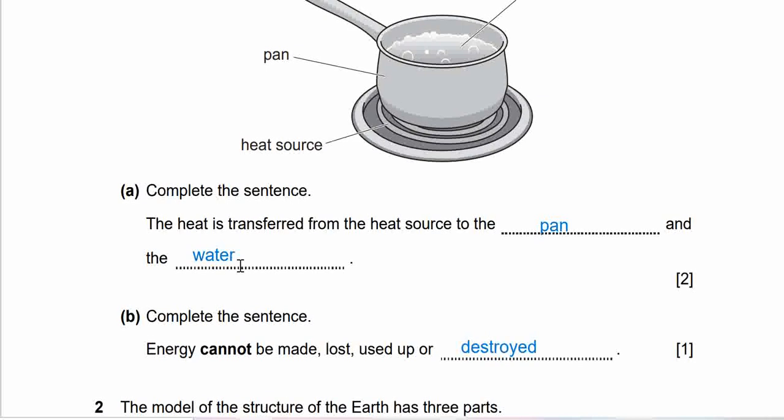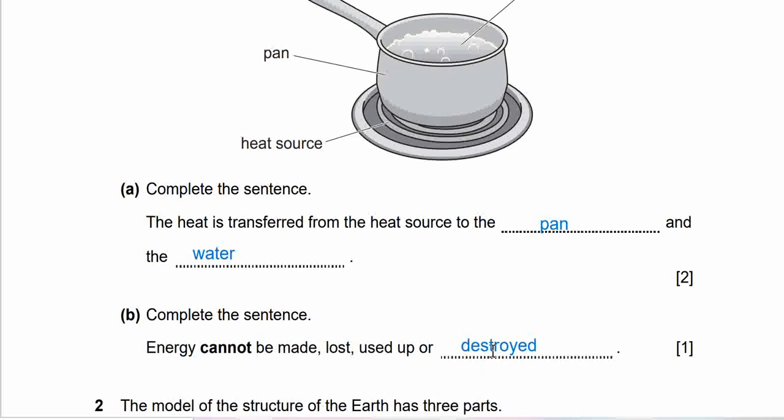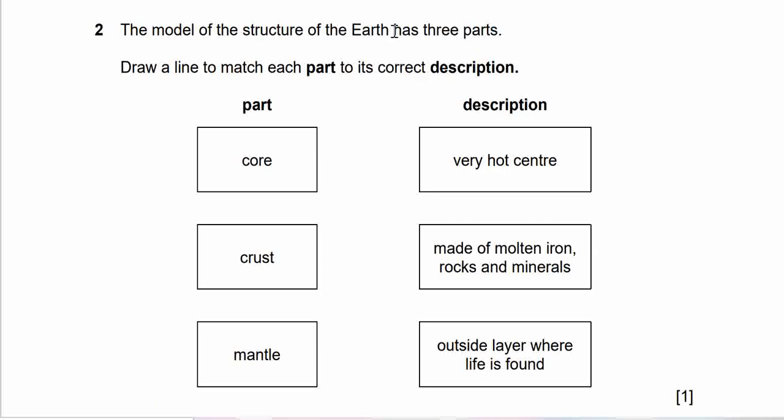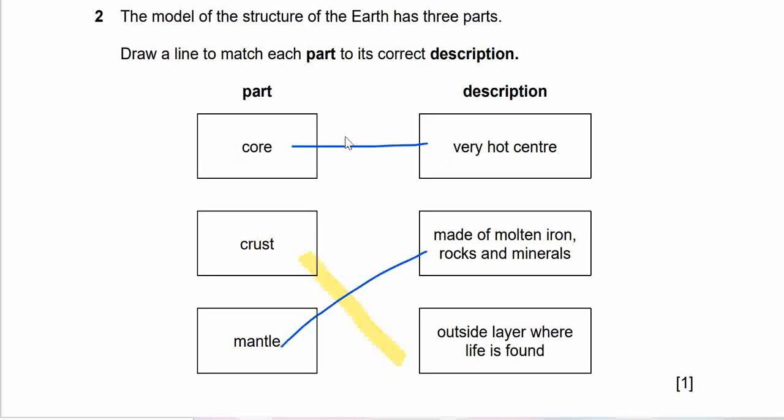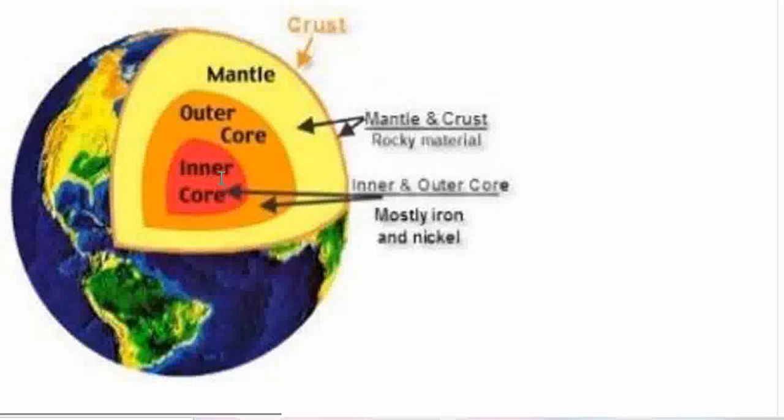Question 2: The model of the structure of the Earth has three parts. Draw a line to match each part to its correct description. Core, mantle, description: very hot center made of molten iron, rocks and minerals, and outside layer where life is found. The answer: Core is very hot center, crust is outside layer where life is found, mantle is made of molten iron, rock and mineral. The crust is made of plates or tectonic plates.